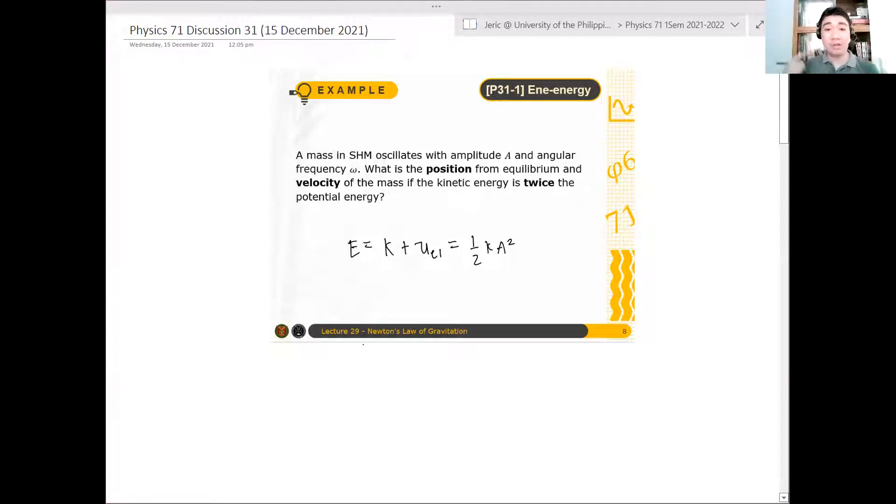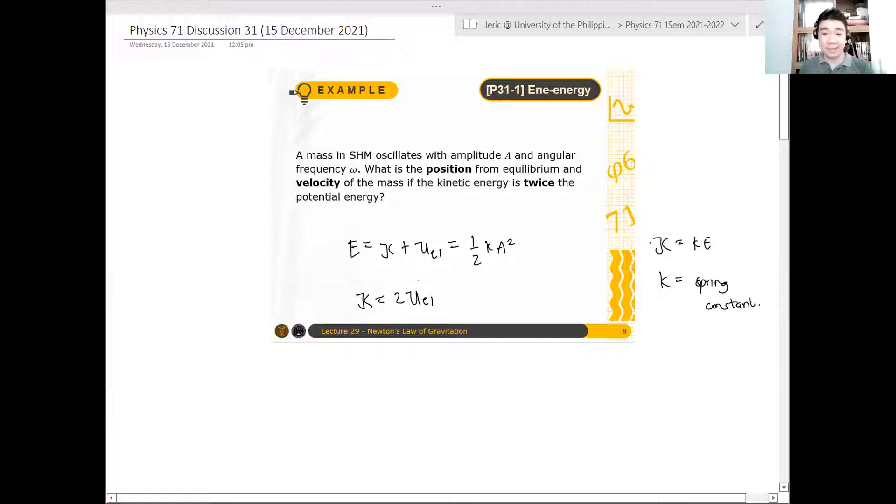Now, from the condition, from the problem, the kinetic energy is twice the elastic potential energy. I'll just use capital K. Sorry for that because they're the same k. This K here is the kinetic energy. The small k is the spring constant. That's to be different. Okay, now, and hence,